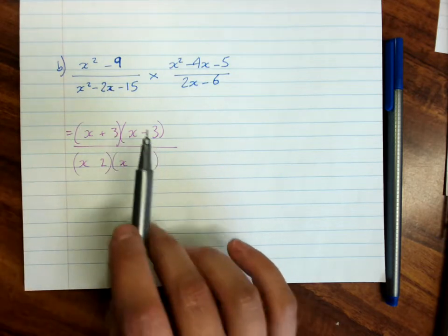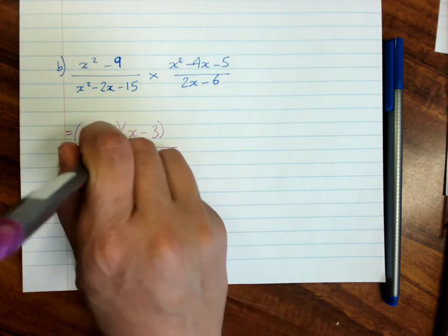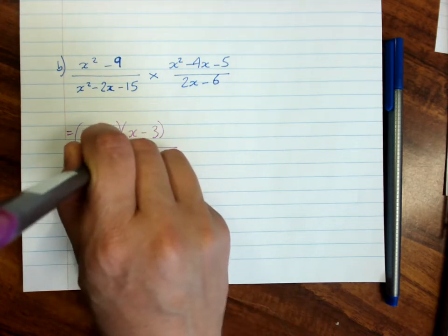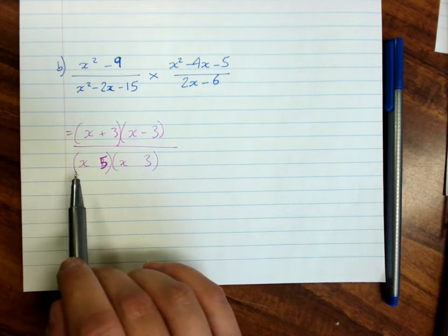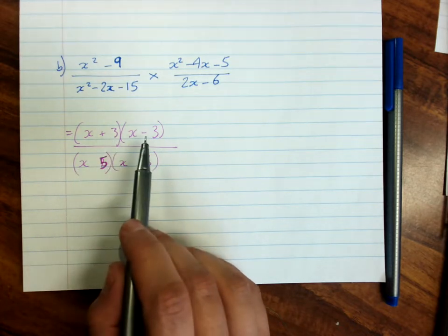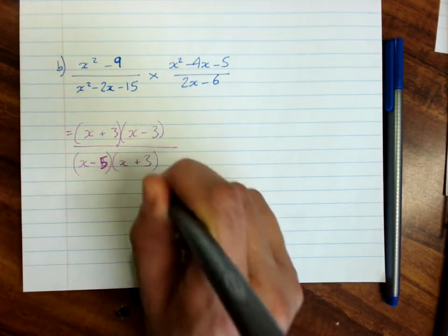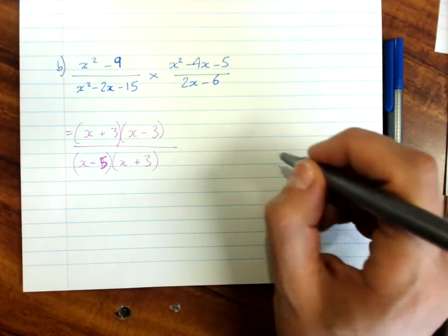So oh hang on a second it's not 2 and 3. What am I thinking? It's 3 and 5. Sorry. Middle one's negative so the larger one must be negative. Sorry. My slight problem with numbers there.